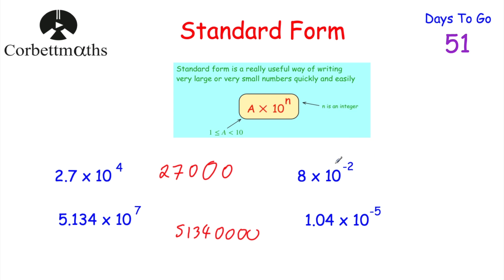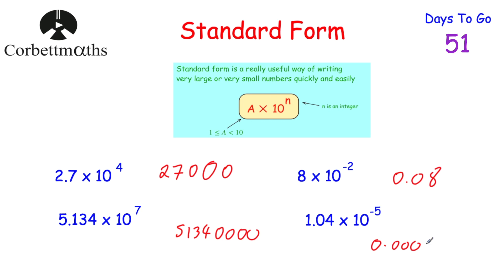Now the small numbers — these are quite nice. 8 × 10⁻²: we put two zeros in front, giving 0.08. Because we're multiplying by a negative power, we move the digits to the right — the 8 moves two columns to the right to give 0.08. Finally, 1.04 × 10⁻⁵: because the power is negative 5, we put five zeros in front, giving 0.0000104. So 1.04 × 10⁻⁵ = 0.0000104.